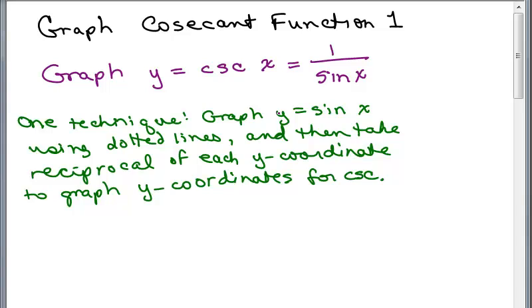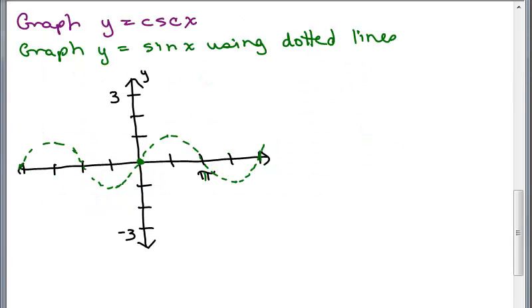And this is just one technique. We can graph y equals sine of x, but we're going to use dotted lines because that's not really the final graph we want. And then we're going to take the reciprocal of each y coordinate to graph the y coordinates for cosecant.